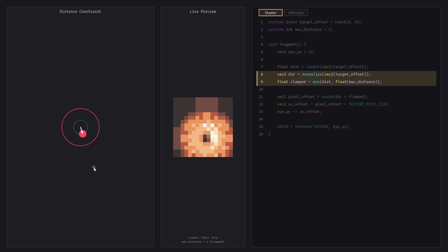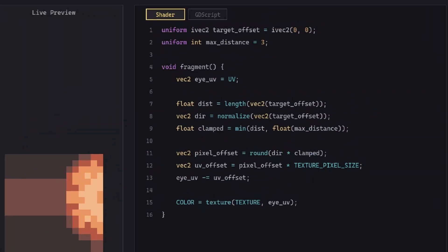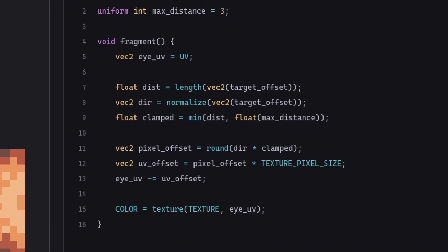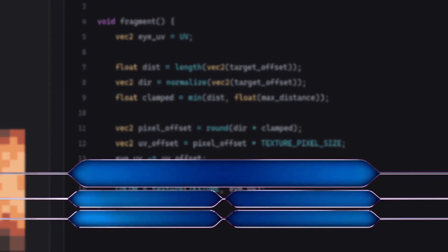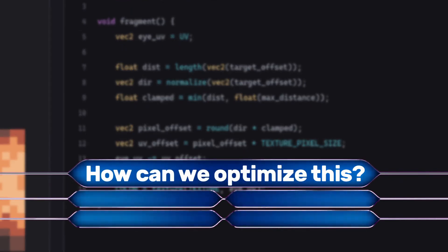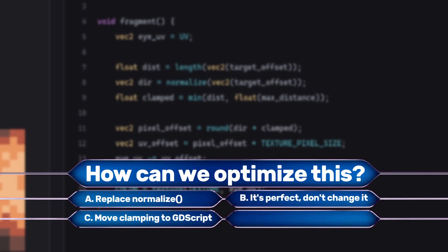Now keen-eyed viewers might notice we're doing a lot of redundant work — we're calling length and then normalise. How can we optimise this? A: replace the normalise call and calculate the direction using the offset divided by distance. B: it's perfect, it works, don't change it. C: move the offset clamping to GDScript. Or D: use C sharp. Have a think about that while I tell you about my very first sponsor, Brilliant.